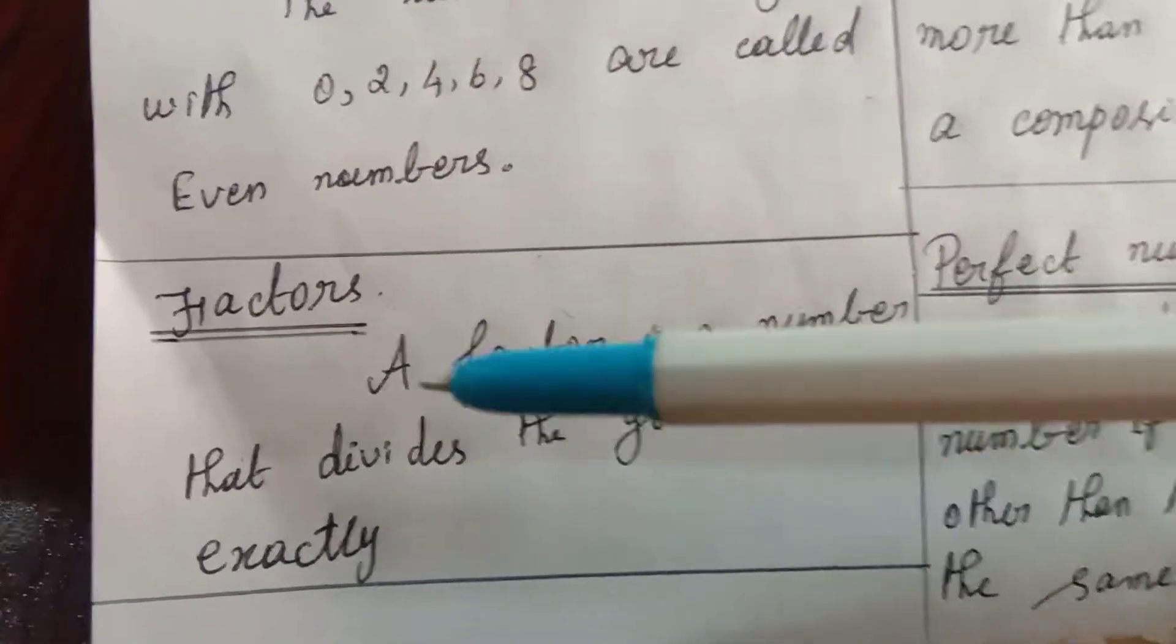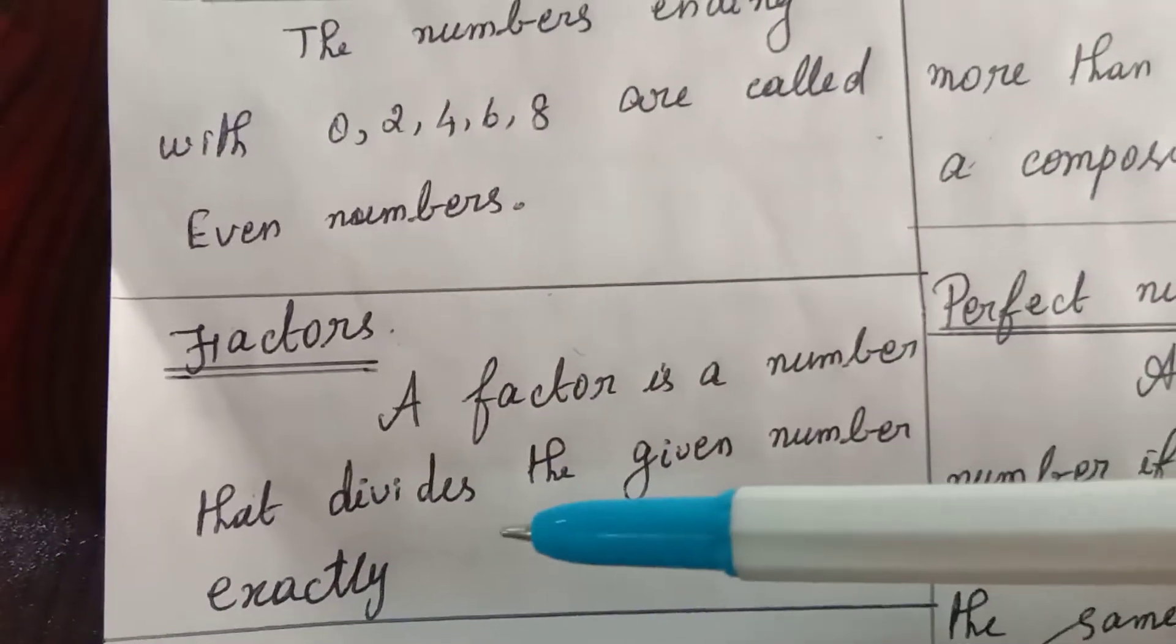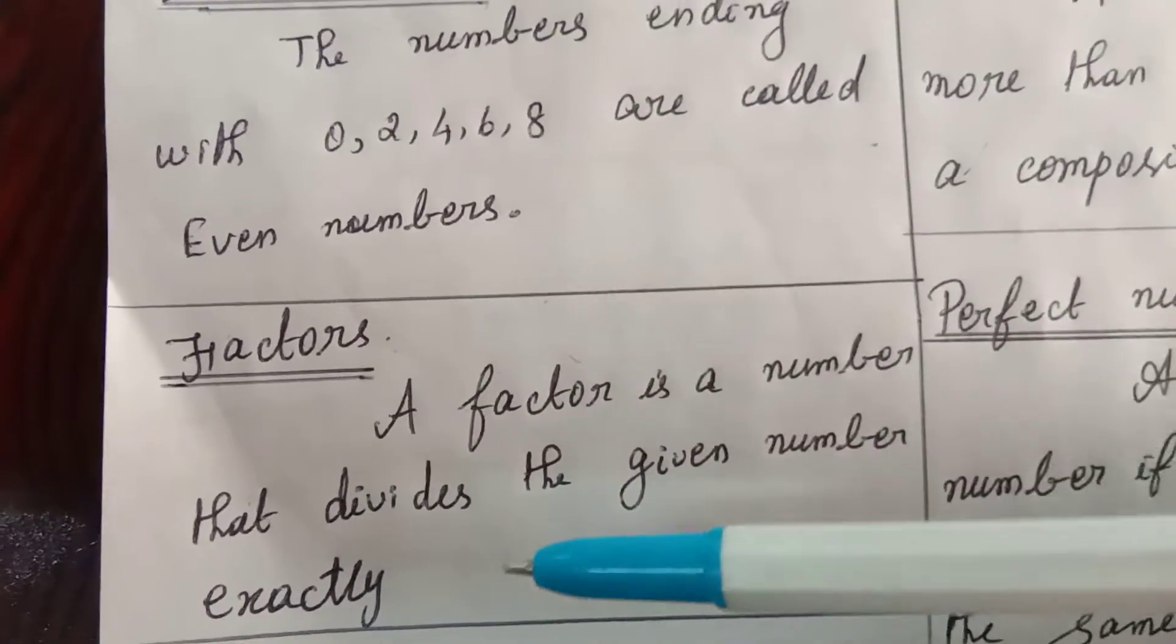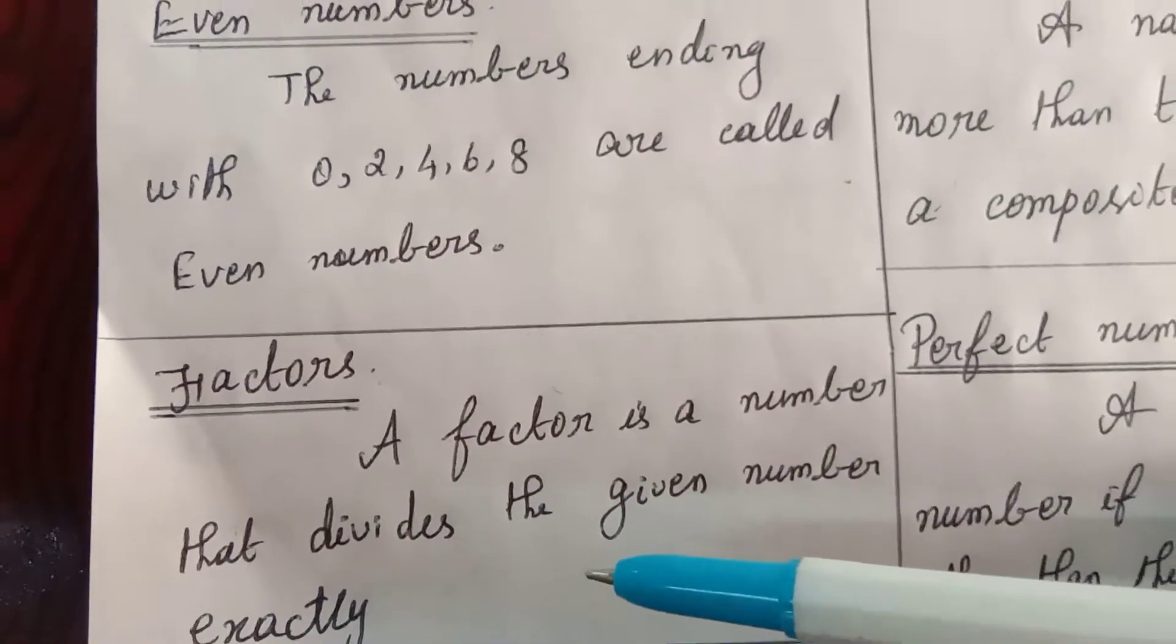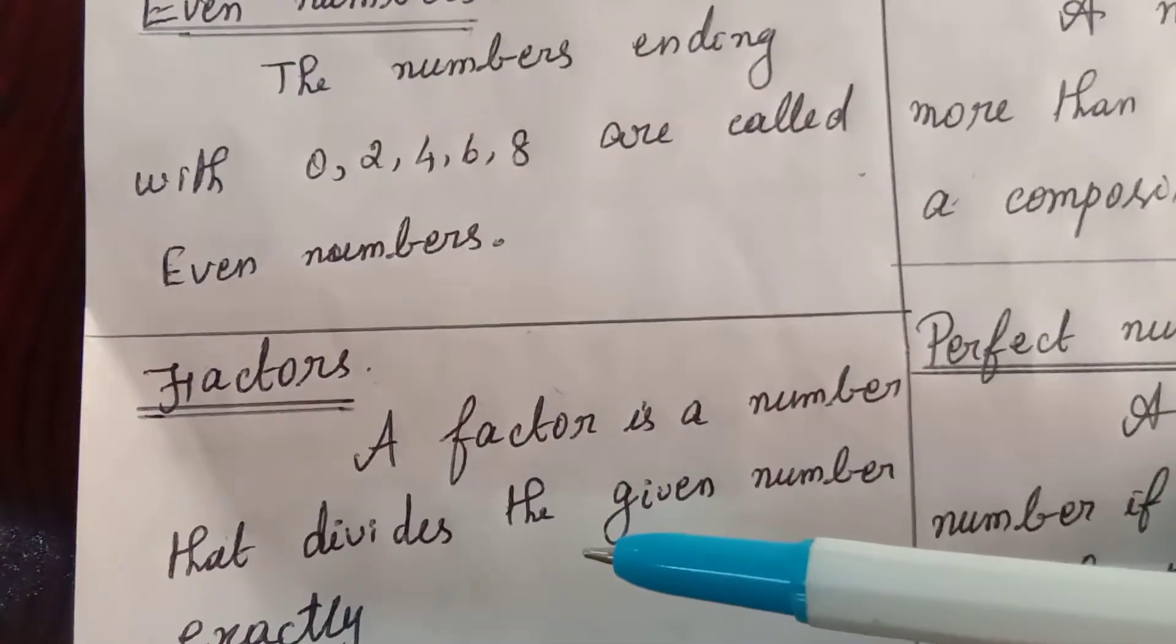Next one, factors. A factor is a number that divides the given number exactly. Example: 2 divides 10 exactly, so 2 is the factor of 10.